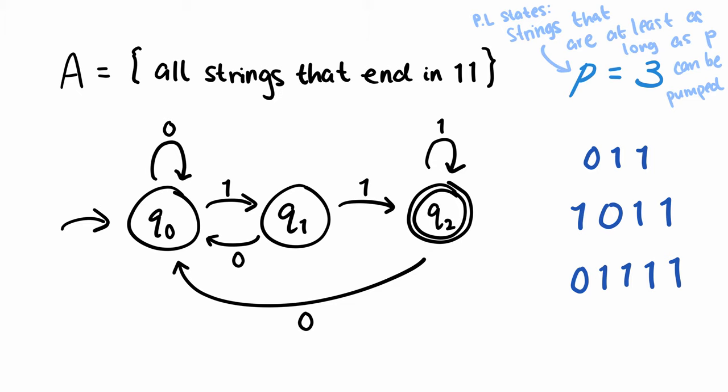For 1011, the substring 10 took us between Q0 and Q1. For 01111, substring 0 allowed us to revisit Q0.